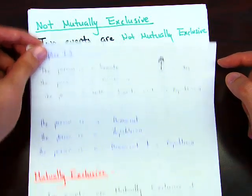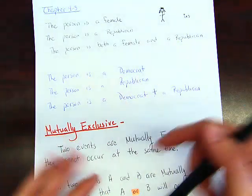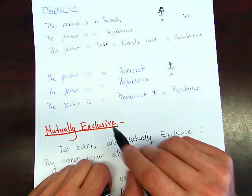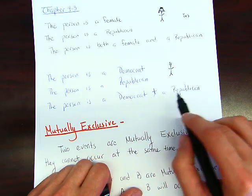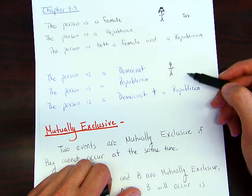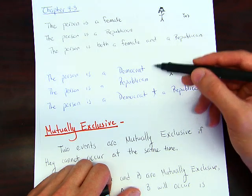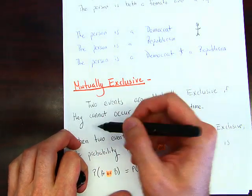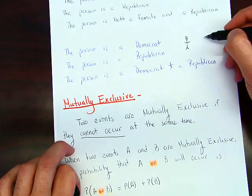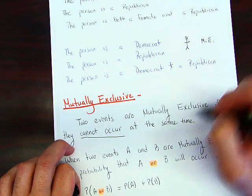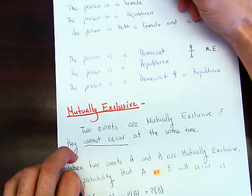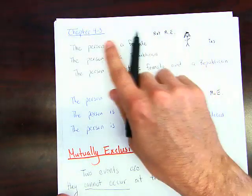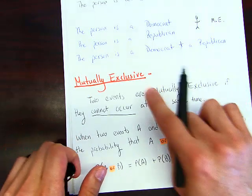Now let's look at another example: the person is a Democrat and the person is a Republican. Notice you can't be both a Democrat and a Republican — you have to be either or. So two events are mutually exclusive if they cannot occur at the same time. We'll write that as ME. The female/Republican example is not mutually exclusive.